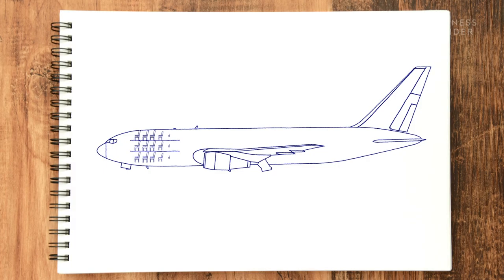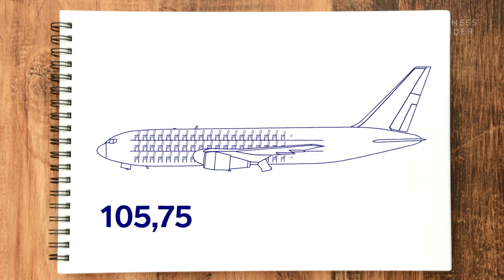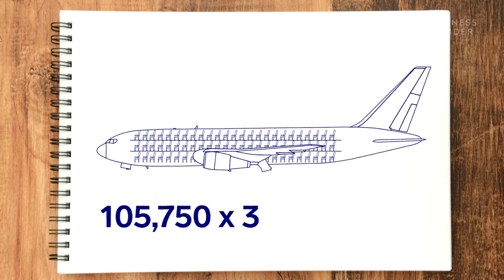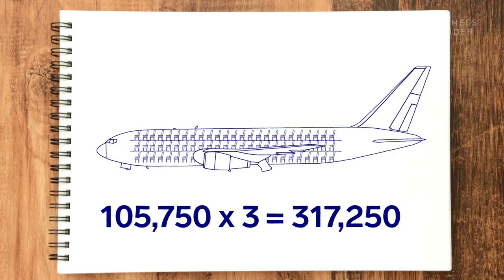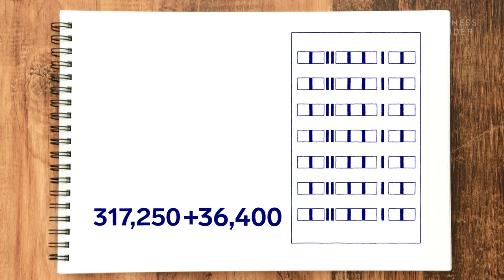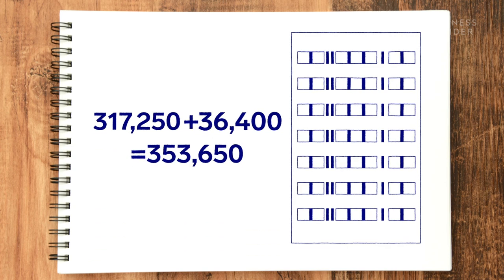Now I'm going to picture how many layers of seats I can stack on top of each other in the cabin. I'll say maybe three rows, because the seats are high. Three hundred seventeen thousand two hundred fifty golf balls in three layers of seats — that comes out to 353,650.